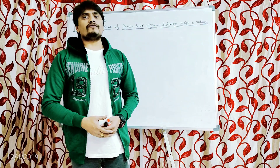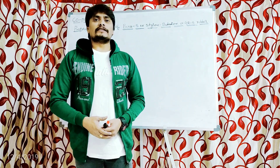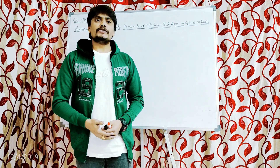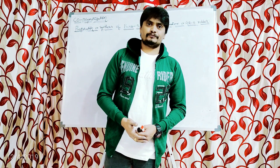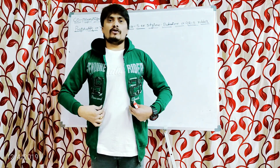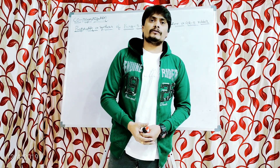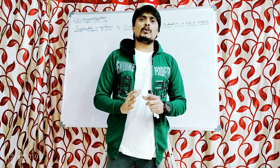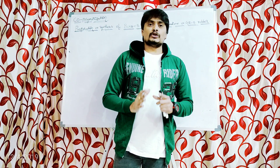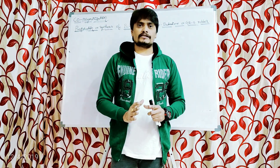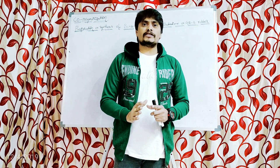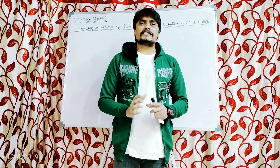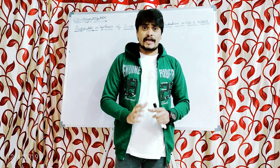Hi students. As a part of the types of polymerization, today I am going to discuss the third type of polymerization, which is the last type — copolymerization. This polymerization involves the repeated combination of two or more than two different unsaturated monomeric units, resulting in the formation of a high molecular weight organic polymer.